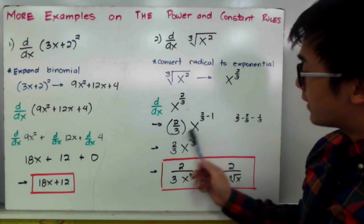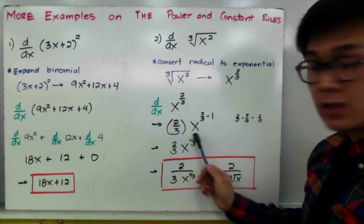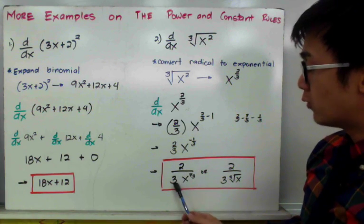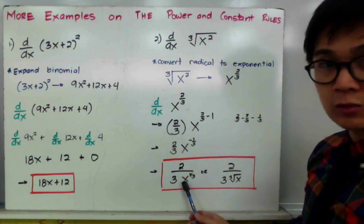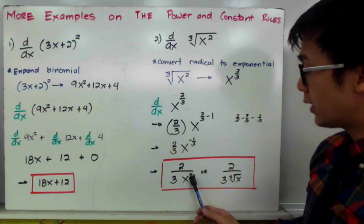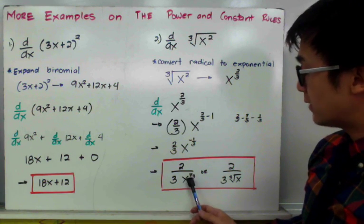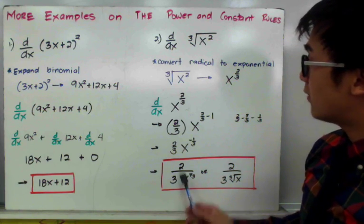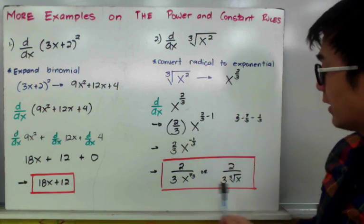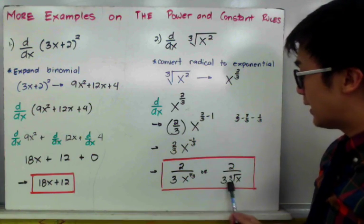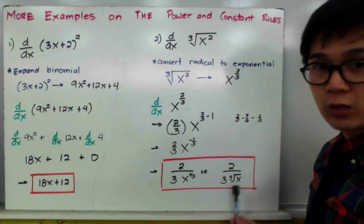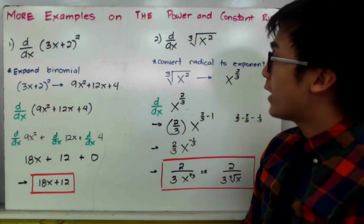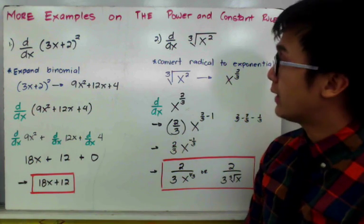To get rid of the negative exponent, we convert it into a fraction: 2 all over 3 times x raised to the positive 1 over 3, which we can convert into a radical function. So the simplest form of the derivative of the third root of x squared is 2 all over 3 times the third root of x. And that is how we use the power rule and the constant rule in finding the derivative for examples 1 and 2.